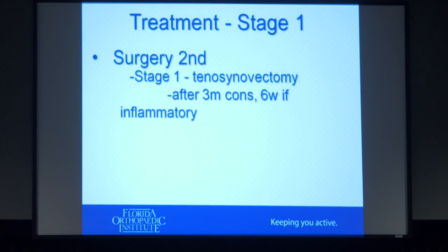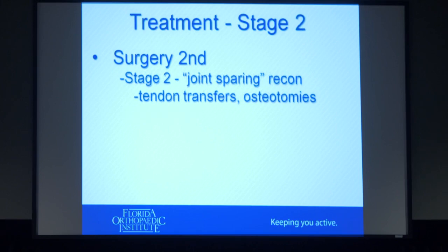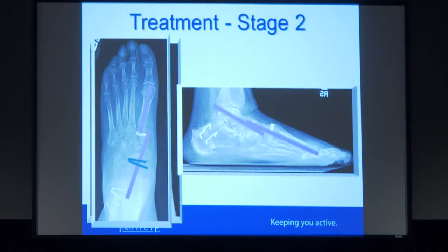If conservative treatment doesn't work, we can do surgery. For stage one, a tenosynovectomy — cleaning up the tendon since it's still intact but angry. For stage two, we do joint-sparing reconstruction — keeping the joints intact but cutting bones, moving them around, reshaping things, and moving tendons. Everything still moves the same, we're just reshaping. The x-ray shown here is after that kind of surgery for a flexible flat foot.